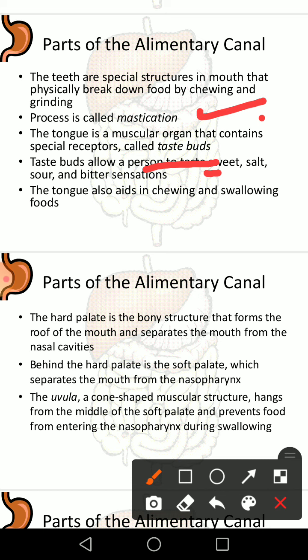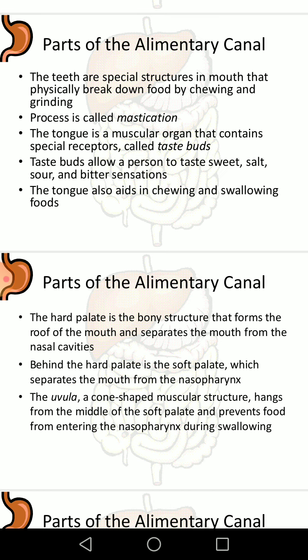Parts of the alimentary canal include the hard palate and the soft palate. The hard palate is a bony structure that forms the roof of the mouth and separates the mouth from the nasal cavity. Behind the hard palate is the soft palate, which separates the mouth from the nasopharynx. The uvula, a cone-shaped muscular structure, hangs from the middle of the soft palate and prevents food from entering the nasal cavity during the swallowing process.